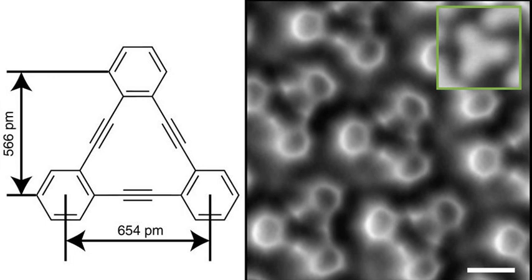Some annulenes, namely cyclobutadiene, cyclodecapentaene or [10]annulene, cyclododecahexaene or [12]annulene, and cyclotetradecaheptaene [14]annulene, are unstable, with cyclobutadiene extremely so.